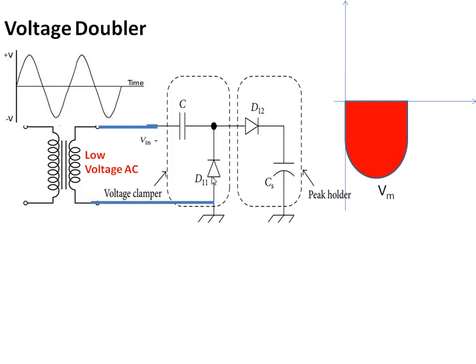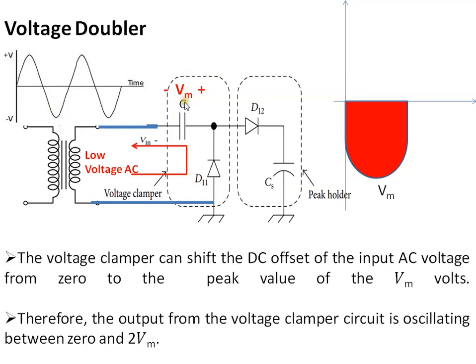Because of this, diode D1 starts conducting and charges capacitor C with voltage Vm in the polarity as shown. Because of the voltage available at this capacitor, the DC offset of the input voltage has shifted from 0 to Vm. Because of this, the output from the voltage clamper circuit is oscillating between 0 and 2Vm.